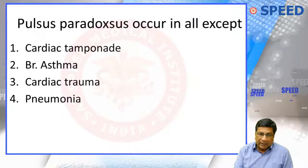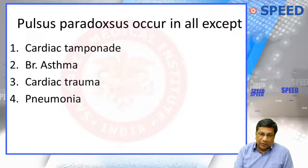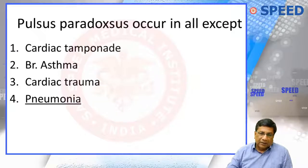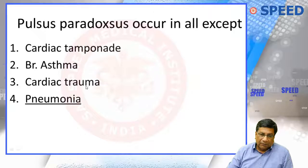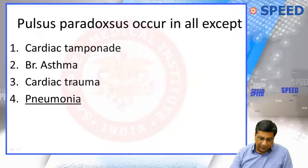Pulsus paradoxus can happen in cardiac tamponade, bronchial asthma, cardiac asthma, and pneumonia — all except which? I told you three conditions can produce pulsus paradoxus. It is pneumonia which will not cause pulsus paradoxus. In cardiac trauma, the patient can have cardiac rupture and sudden cardiac tamponade, which can produce pulsus paradoxus. So in a road traffic accident or trauma patient, if pulsus paradoxus is present, you know there is definitely some cardiac rupture and pericardial effusion.